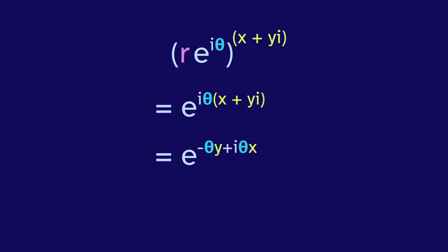And then we can distribute the x plus yi. And now we're left with a real part and an imaginary part. So let's split those. E to the power of a real number is a positive real number. So this becomes the new radius. And then we have e to the i theta x. So theta x is the new angle. And that's it. We can use this formula for those points on the circle.